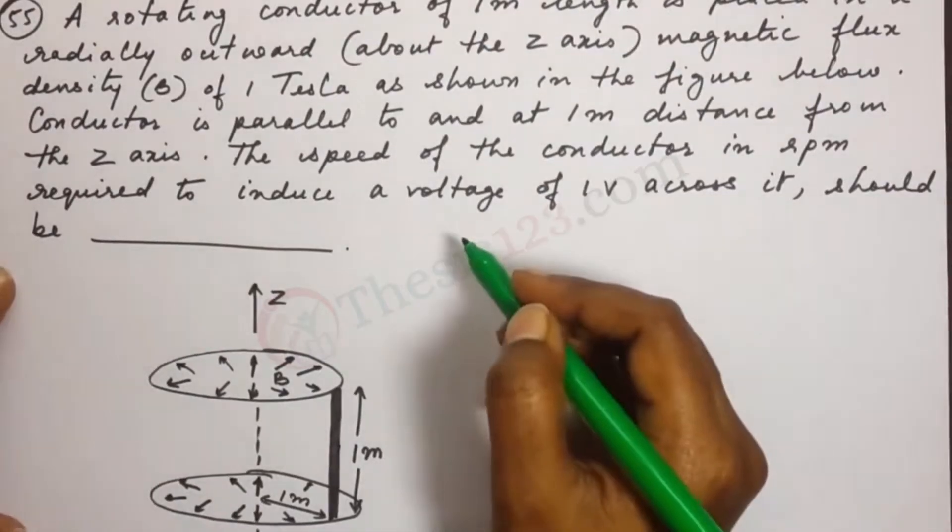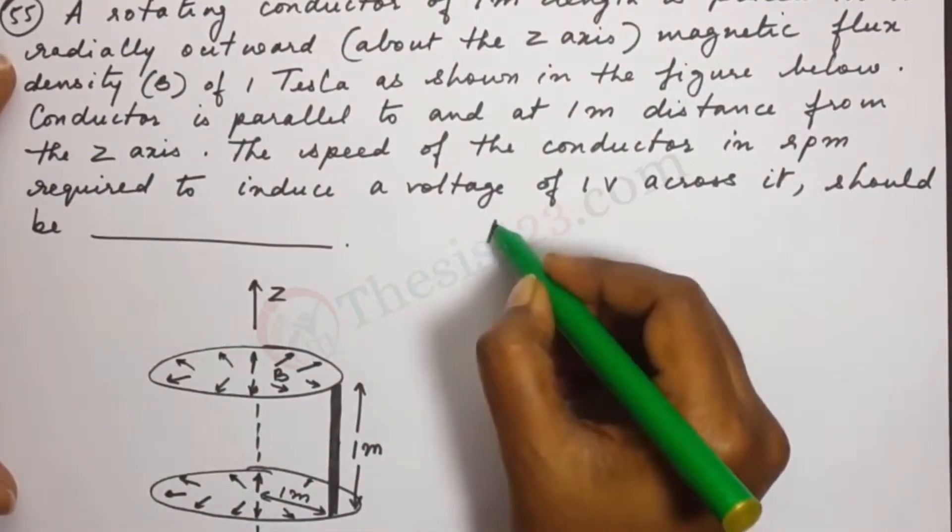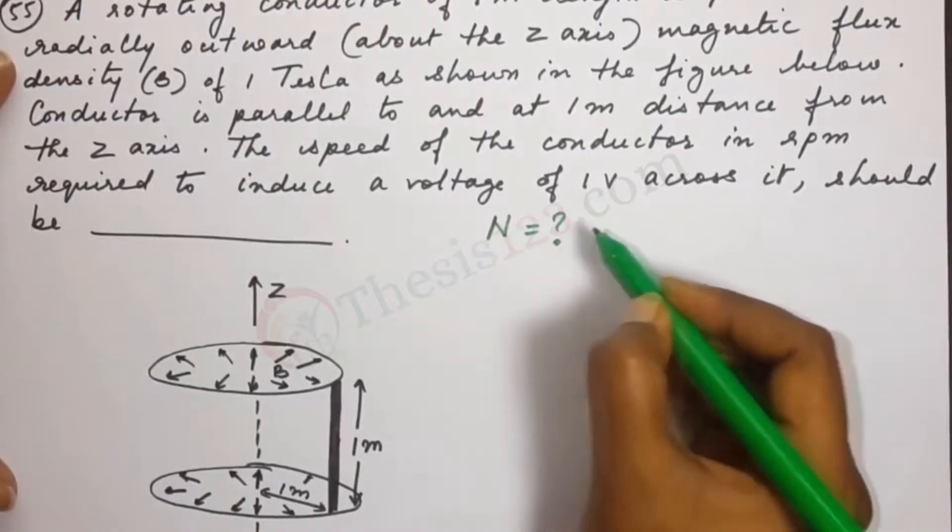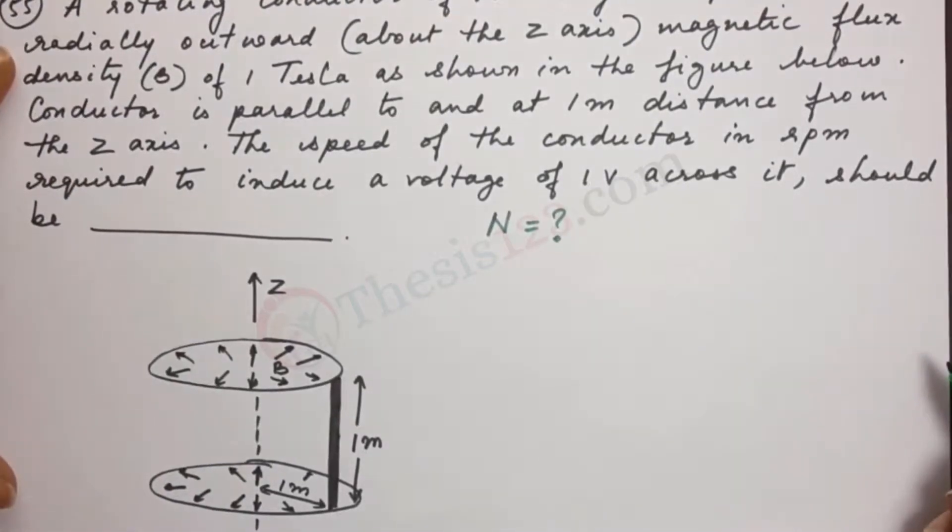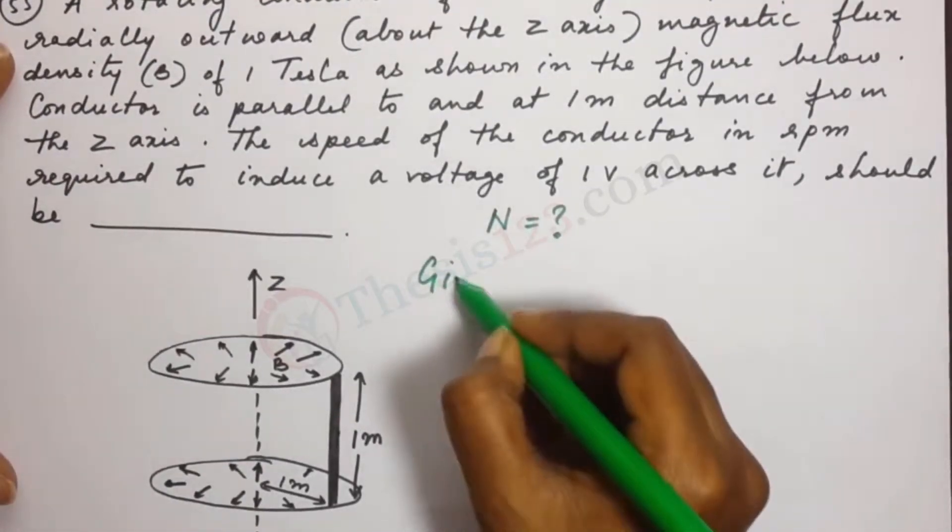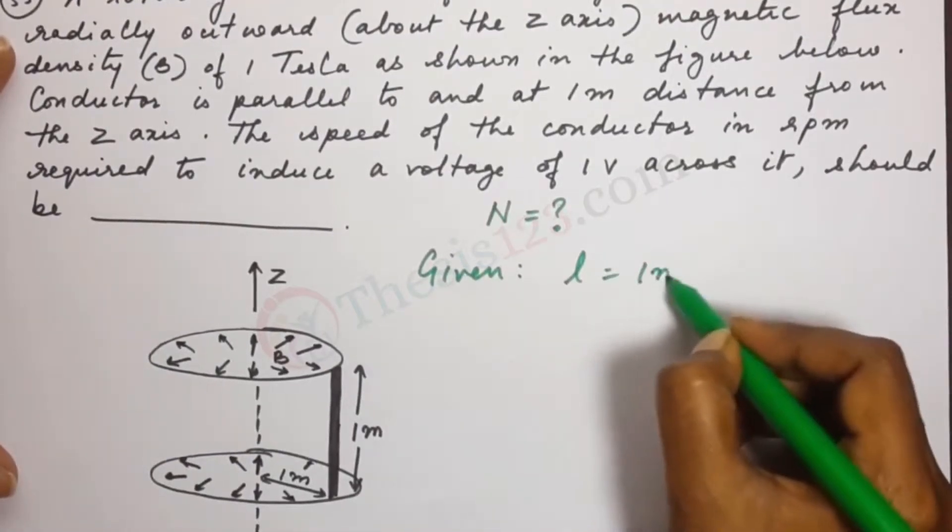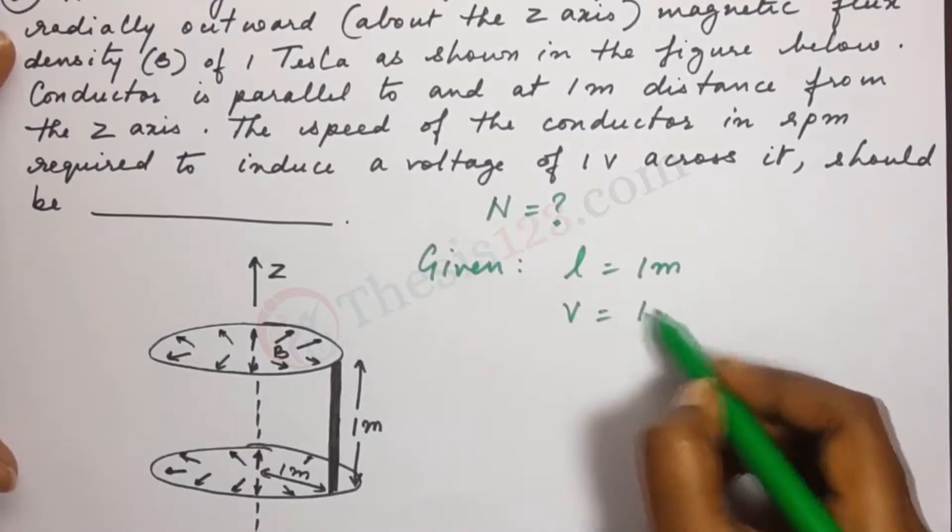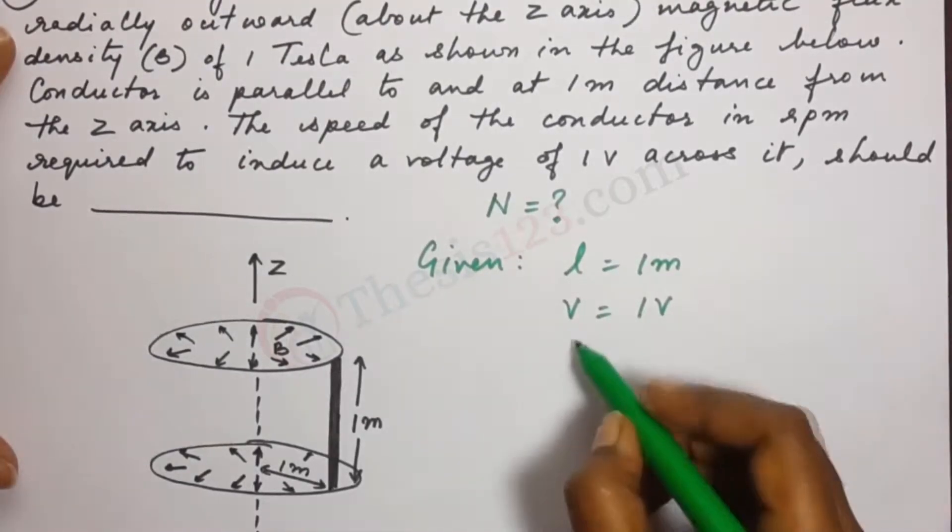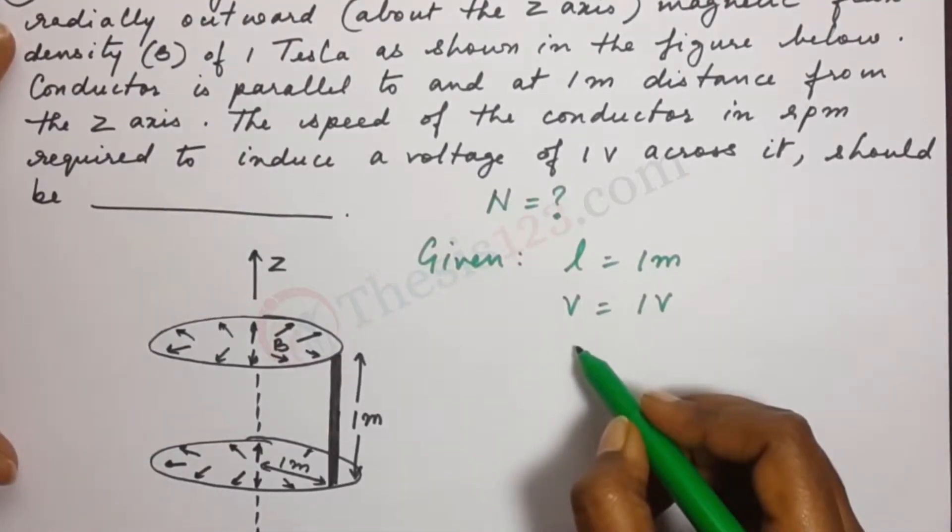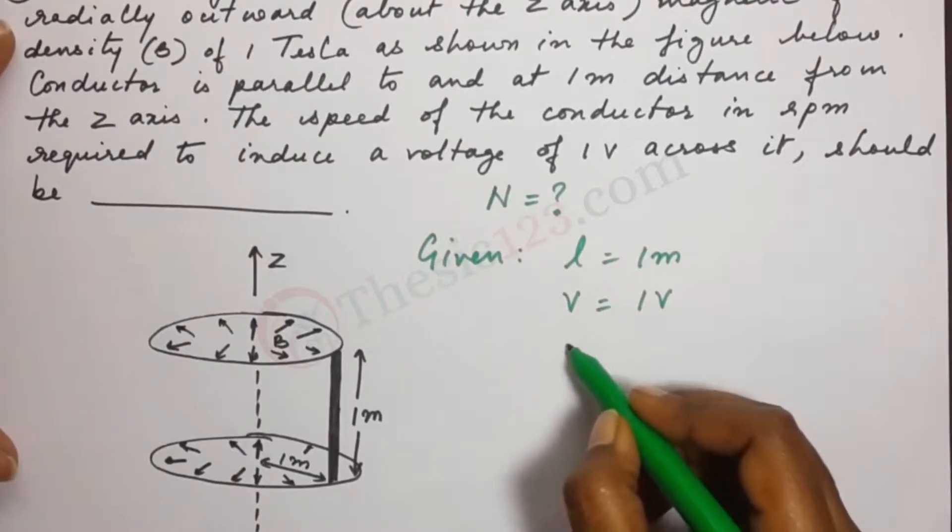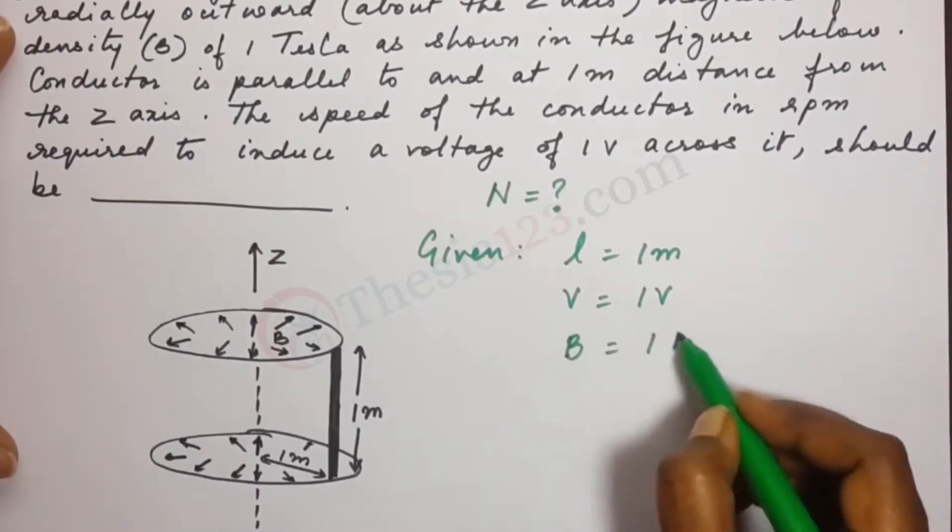So here we are asked to find out what the speed is. Let's write down what's given to us. We have been given the length L as one meter, the voltage as one volt, and the magnetic flux density B as one tesla.